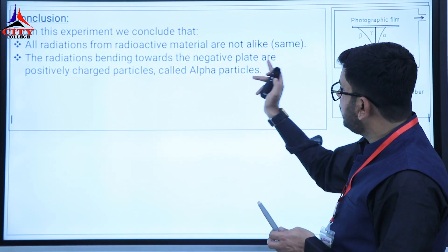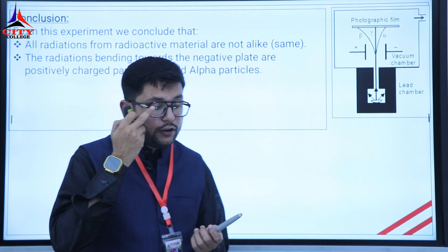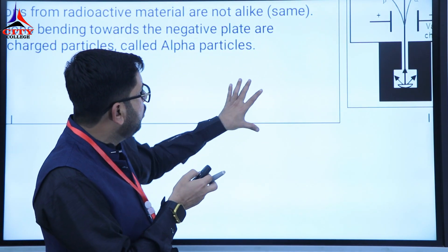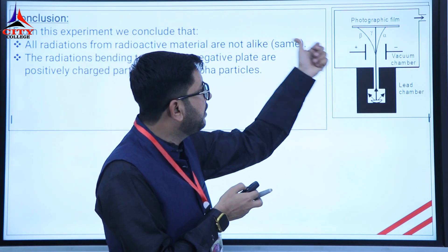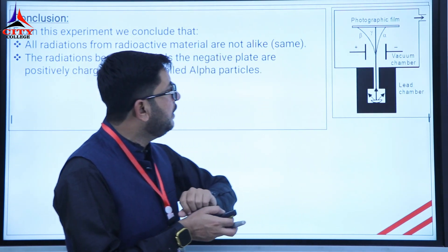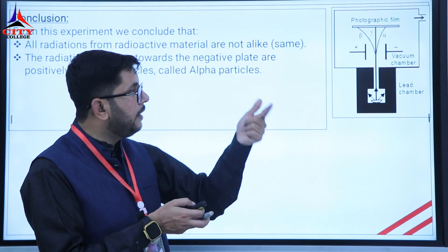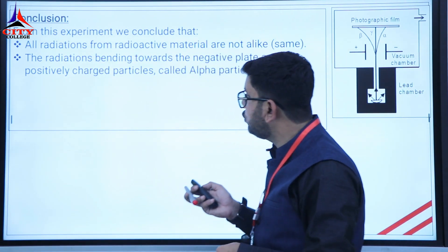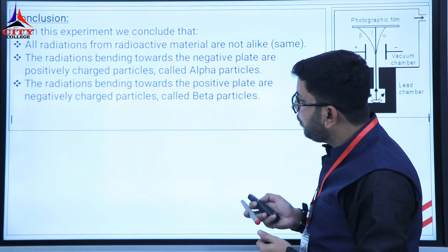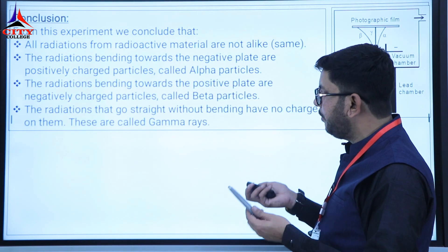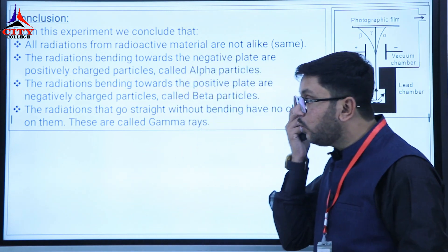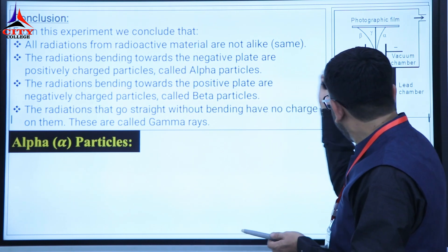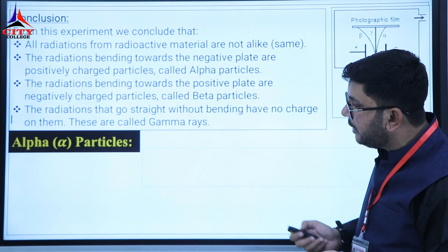The radiations bend towards the negative plate. Beta bends toward the positive plate, meaning beta carries a negative charge. Alpha bends toward the negative plate, meaning alpha carries a positive charge. Gamma travels straight, meaning it carries no charge. So: alpha has positive charge, beta has negative charge, and gamma has no charge.